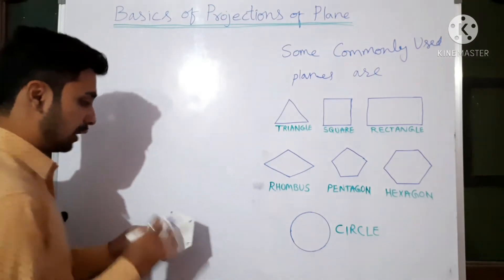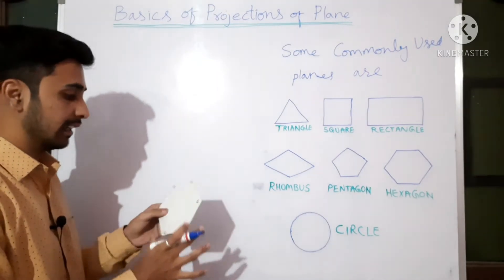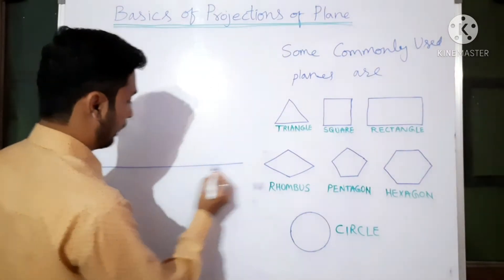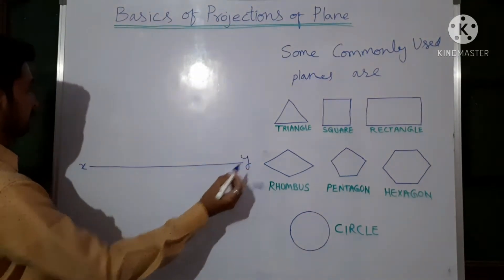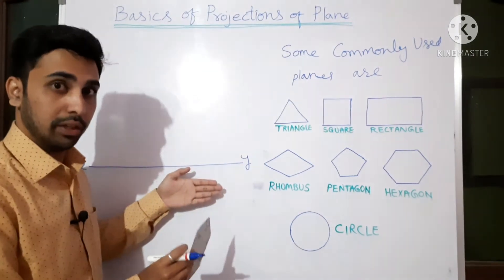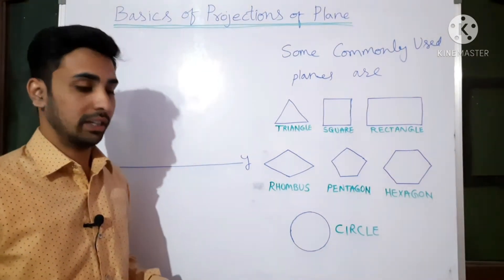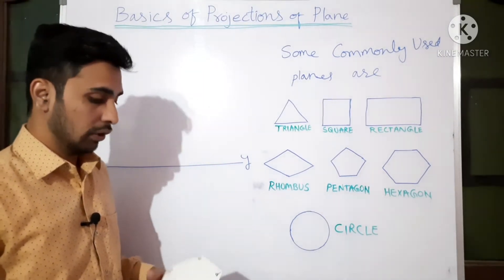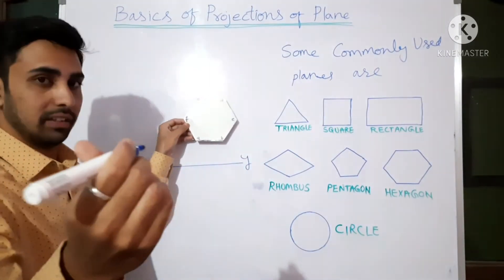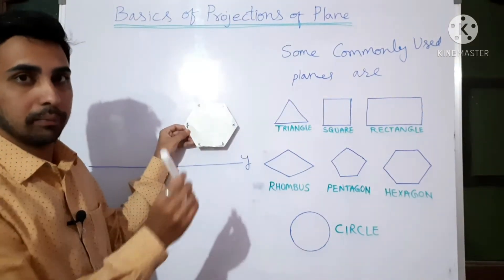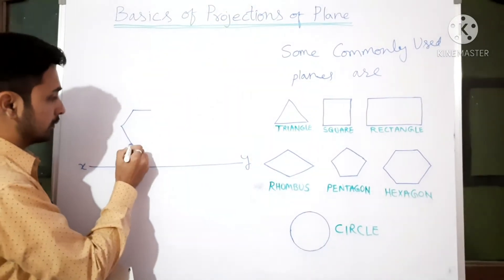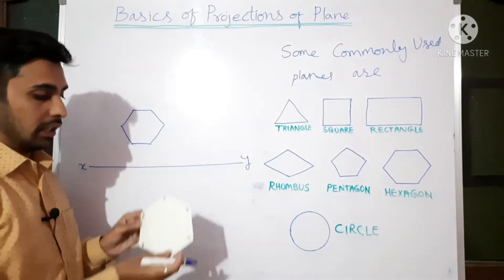I'm taking a hexagon here. Hexagon has six corners. In the hexagon, how they will ask the problem and what terms we need to understand — I will discuss while solving the problem. Now, above the XY line the VP will be there and the horizontal plane is below the XY line. Assume this plane is like this in the VP — from front, you are able to see its shape, so we draw this hexagon shape.